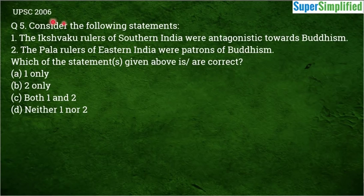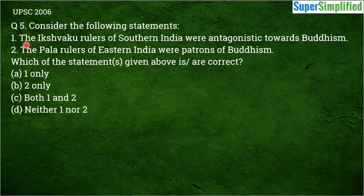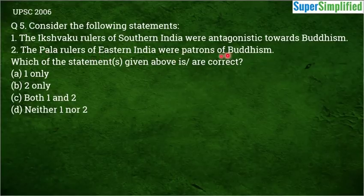Question number 5, from UPSC 2006: Consider the following statements — Statement 1: The Ikshwaku rulers of Southern India were antagonistic towards Buddhism. Statement 2: The Pala rulers of Eastern India were patrons of Buddhism. Which of the statements given above is or are correct?